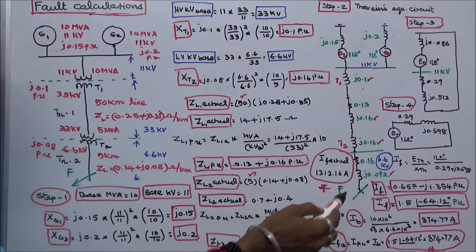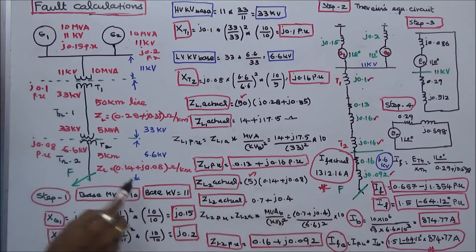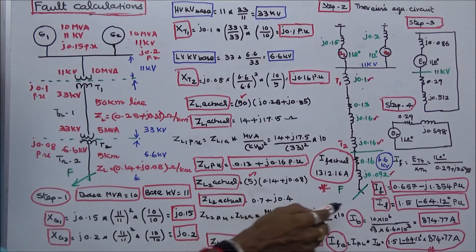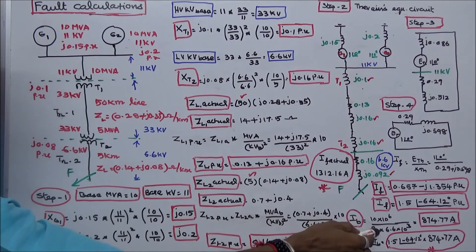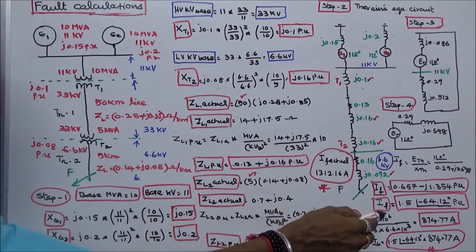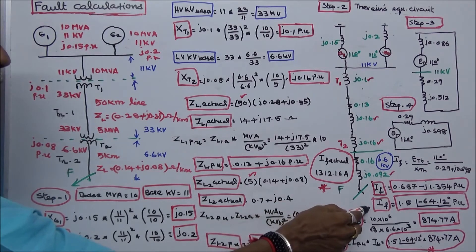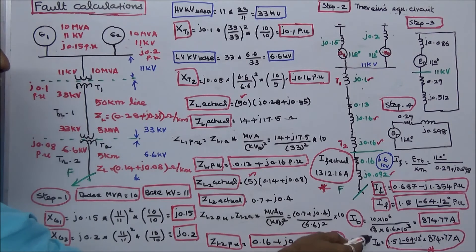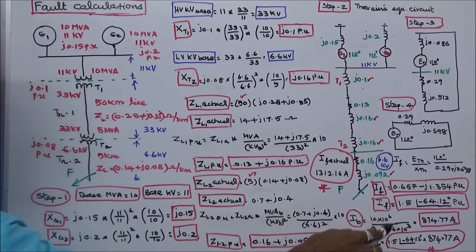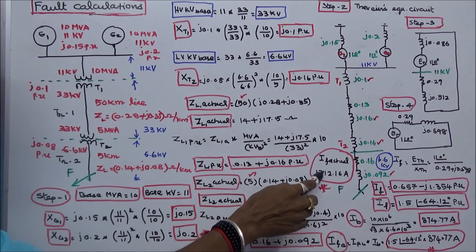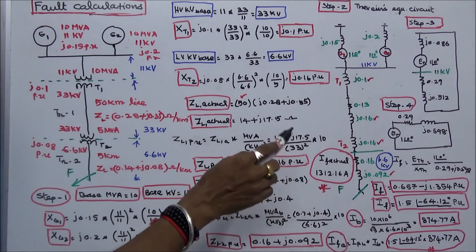The next step is to calculate the base current. The fault occurs where the voltage is 6.6 kV. Base current = (10 × 10⁶) / (√3 × 6.6 × 10³) = 874.77 A. The actual fault current equals the per-unit fault current multiplied by the base current: 1.5∠−64.12° × 874.77 = 1312.16 A.